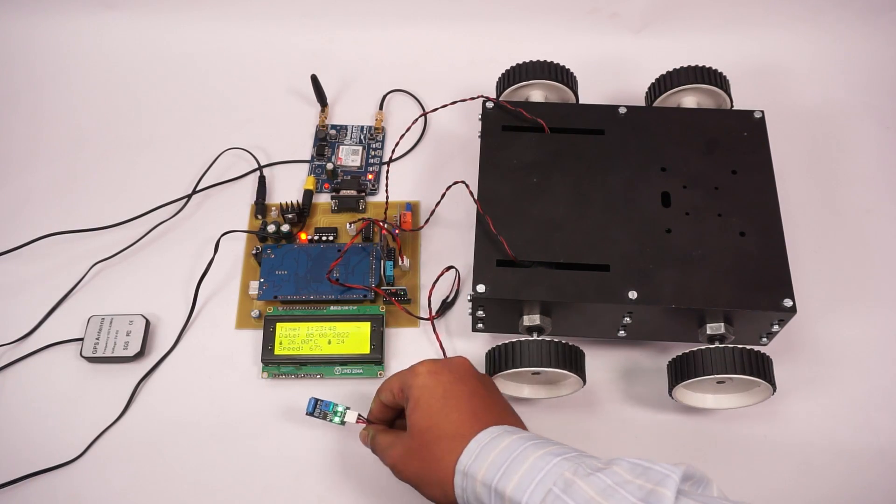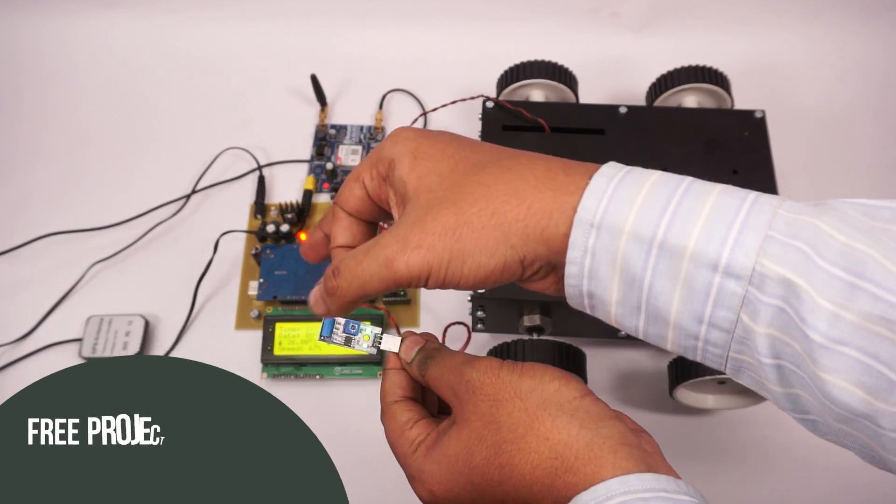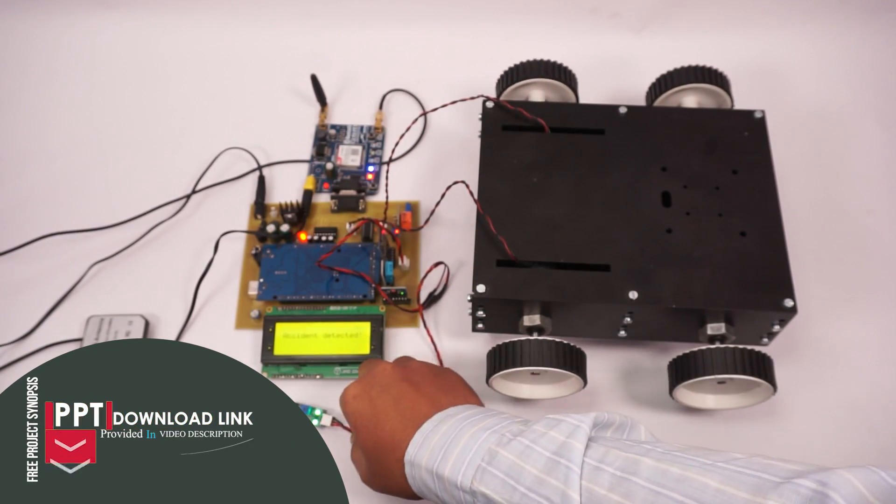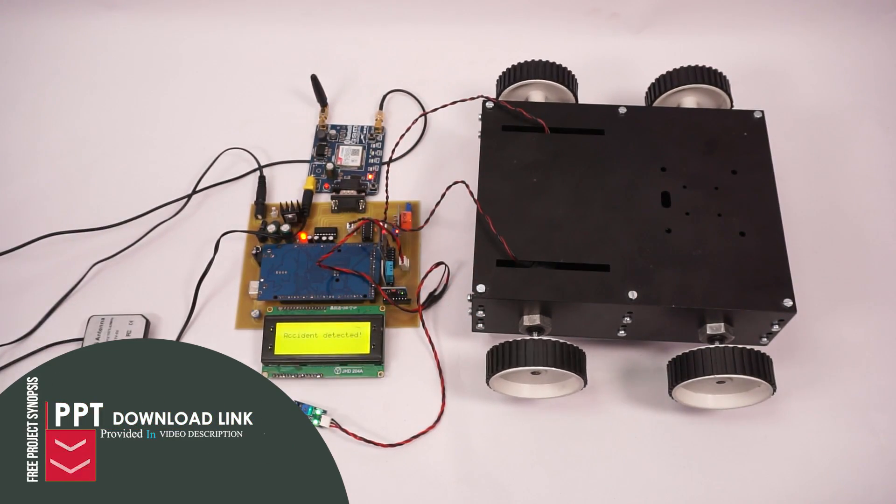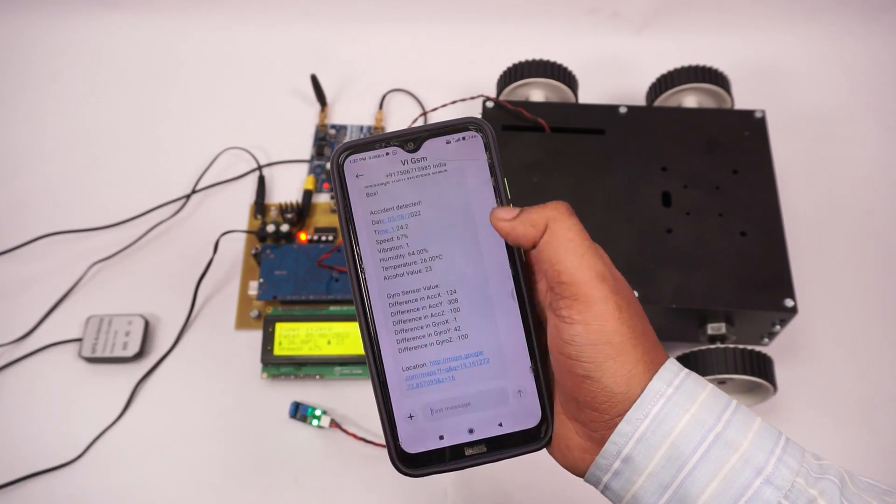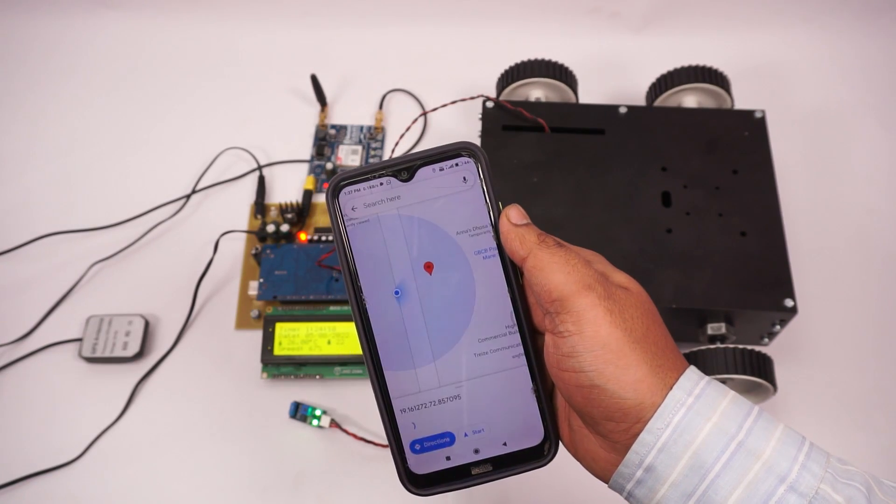Now we will simulate vibration or accident. So whenever an accident happens, high levels of vibration will be detected. So now, as soon as the vibration or accident is detected, we got the values of the sensor as well as the GPS coordinate where the accident was detected.